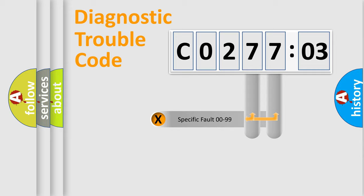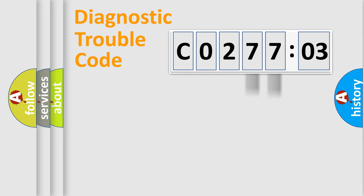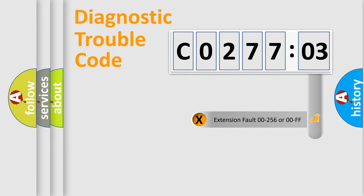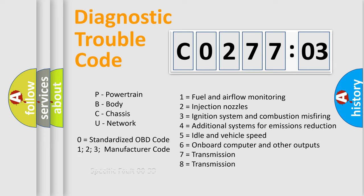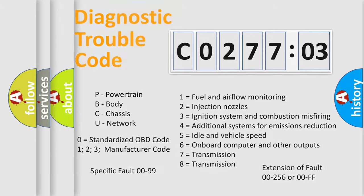Only the last two characters define the specific fault of the group. The add-on to the error code serves to specify the status in more detail — for example, a short to ground. This division is valid only if the second character code is expressed by the number zero.